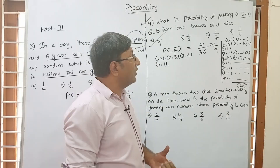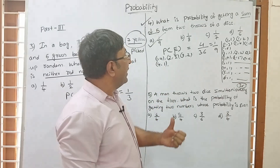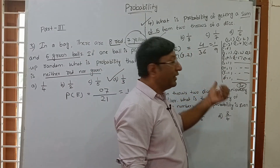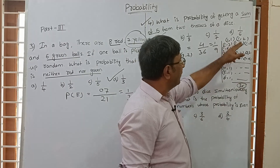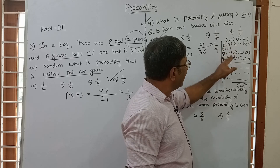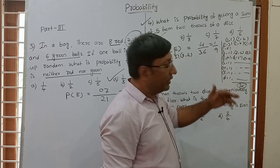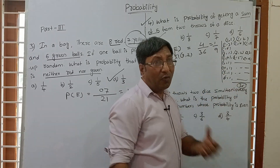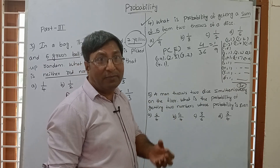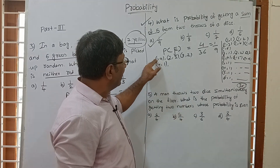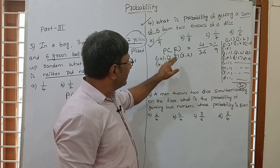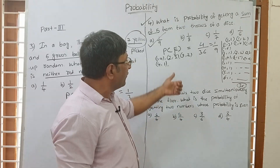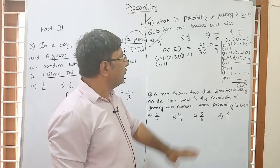To recap question number 4: probability of getting a sum of 5 when 2 dice are thrown. Total outcomes: 36. Favourable outcomes — sum equals 5: (1,4), (2,3), (3,2), (4,1). That is 4 favourable outcomes. So 4 by 36 equals 1 by 9.